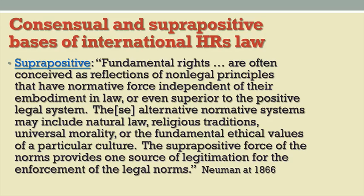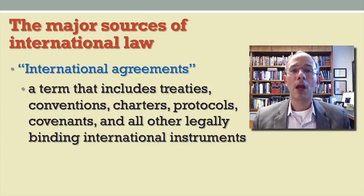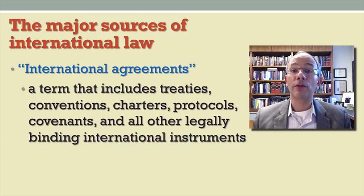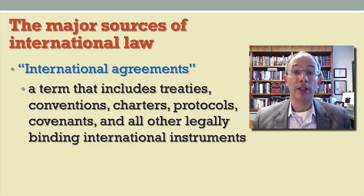Now let's turn to some basic ground rules relating to treaties or international agreements. International agreements is a term that includes a number of different international legal instruments, such as protocols, covenants, conventions, charters, etc. Although there are different labels for these international agreements, they all share one fundamental feature: they embody legally binding obligations for nation states. You'll see many references to these different names throughout the course, but they're all referring to that concept.